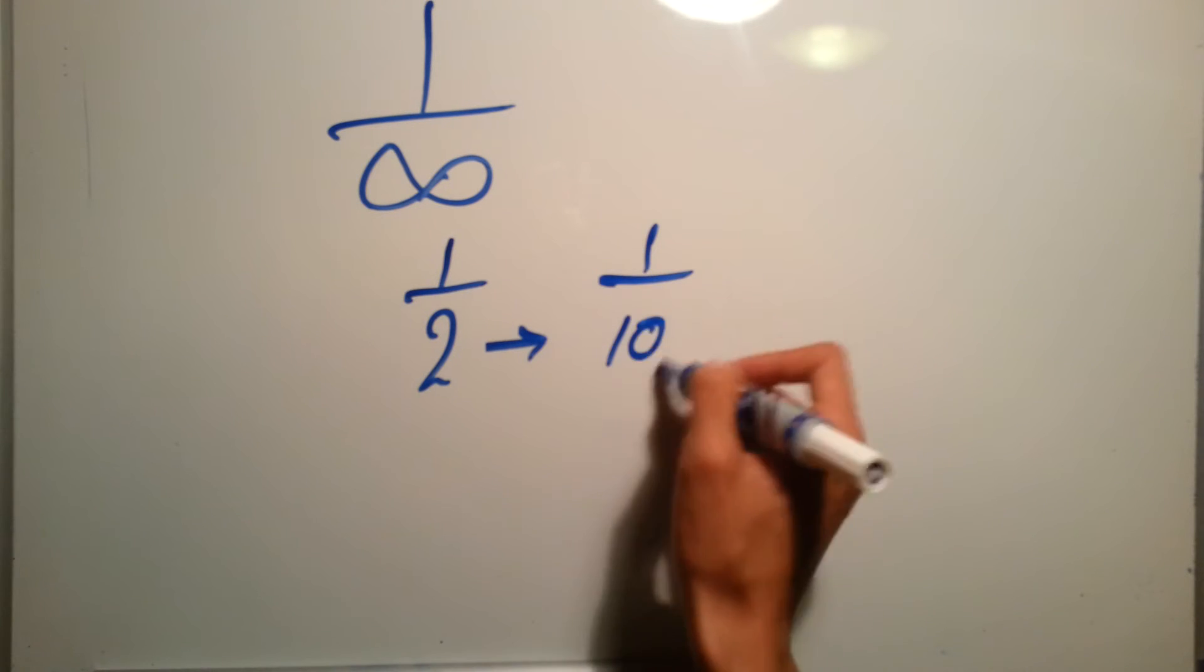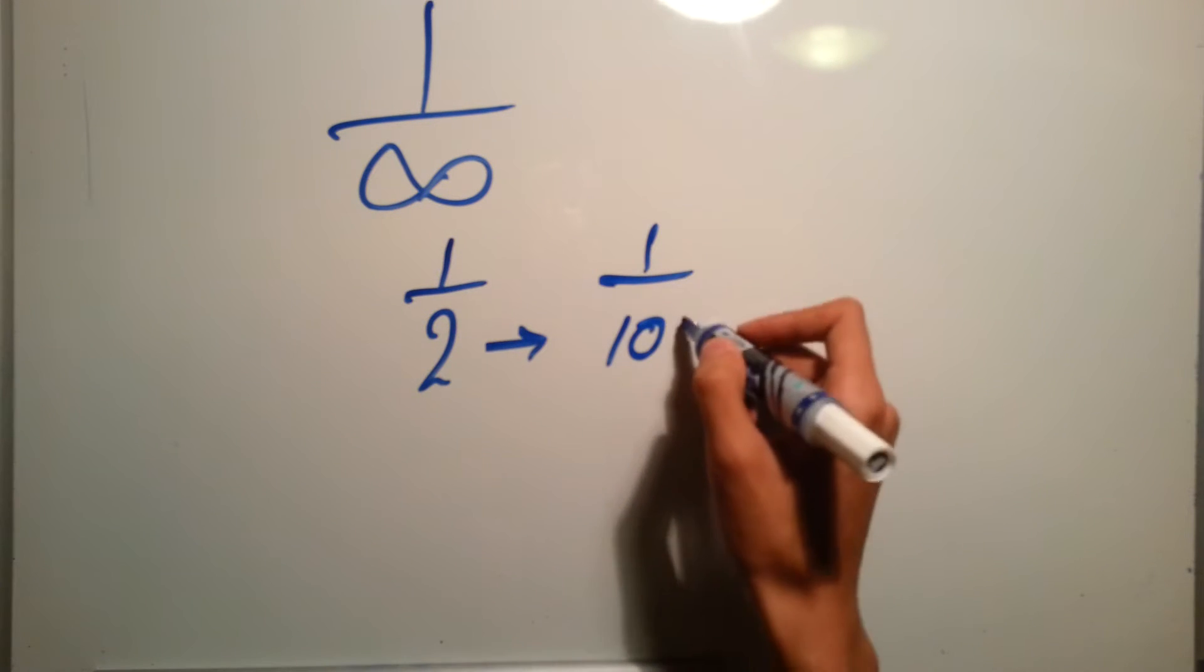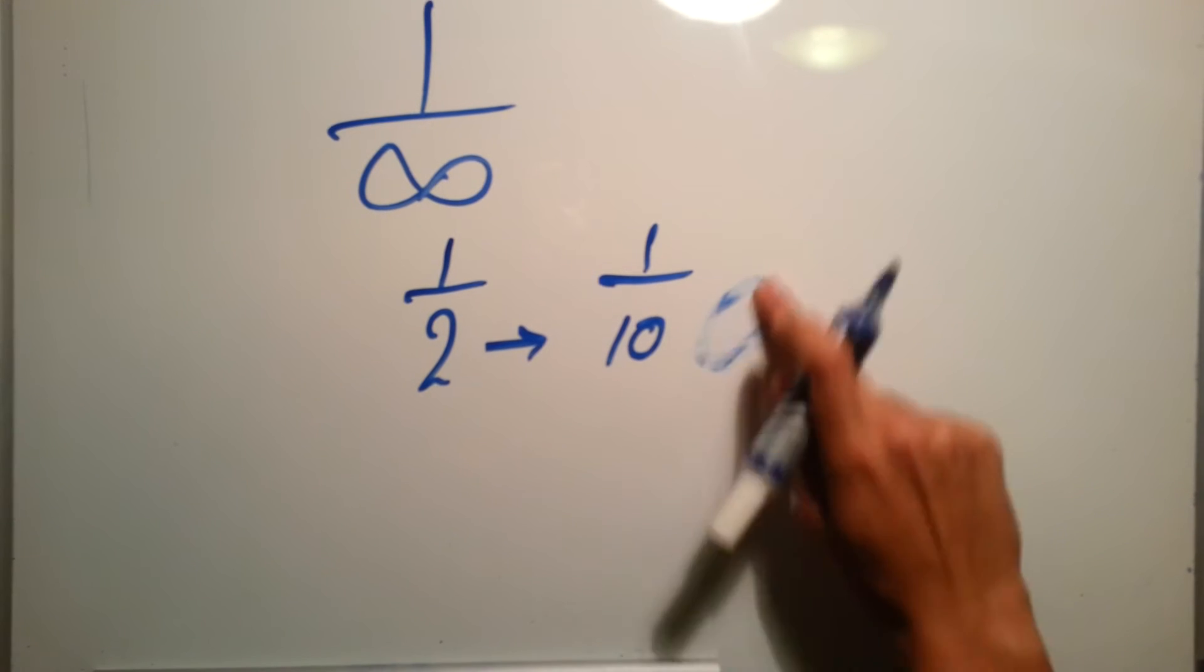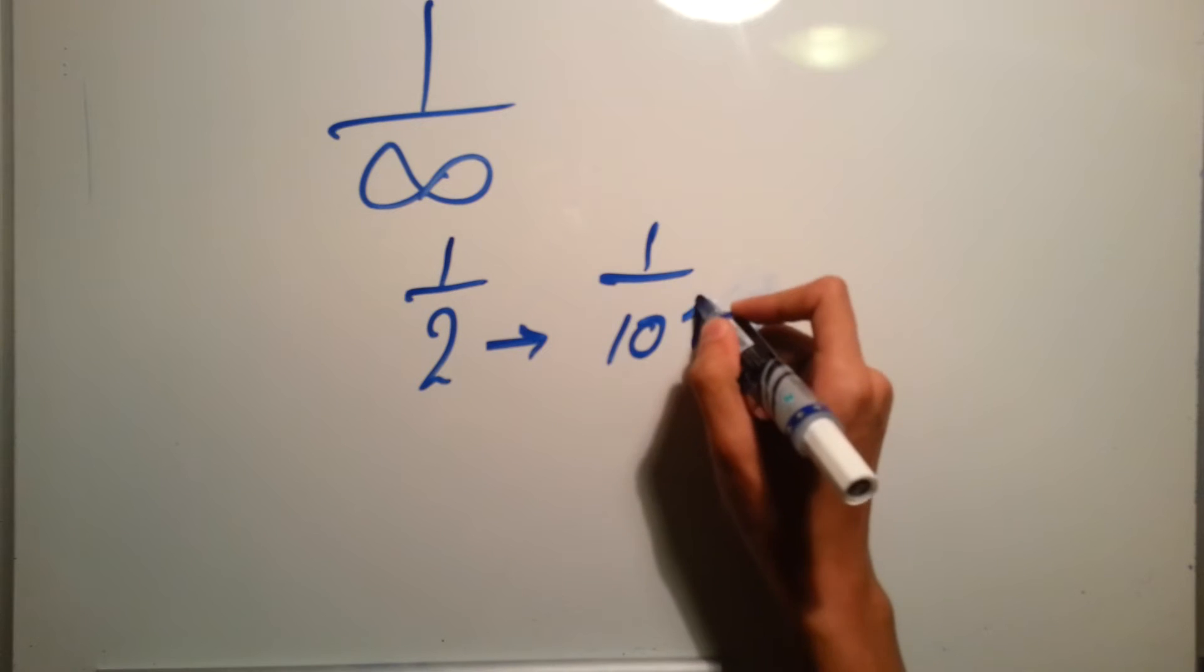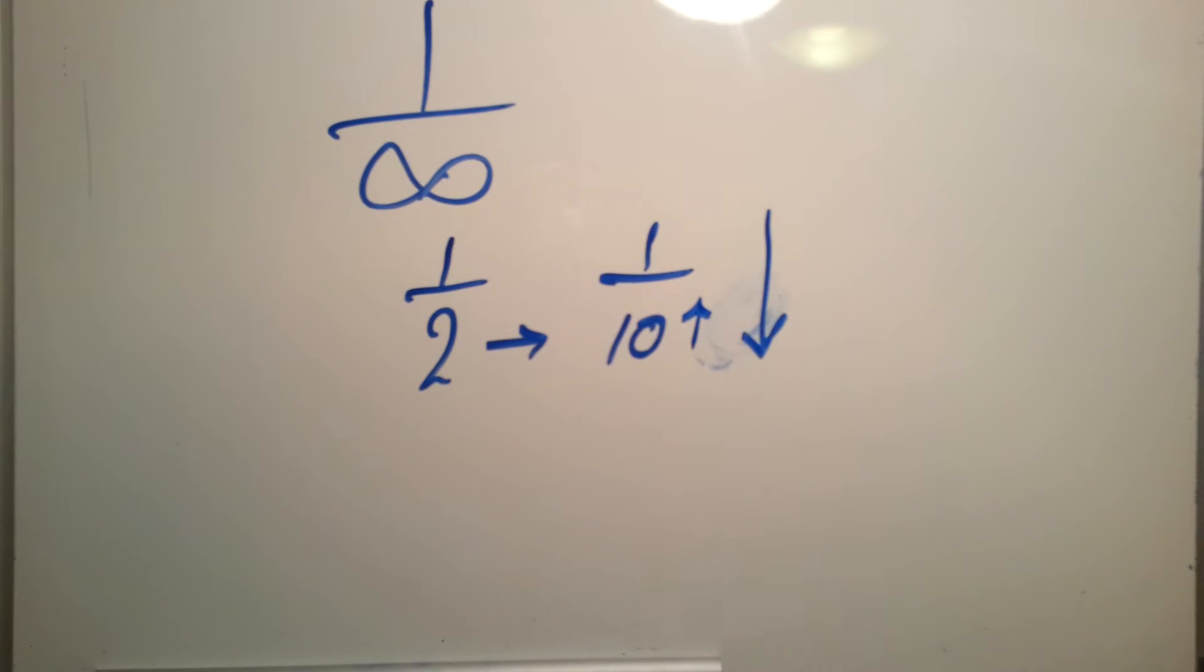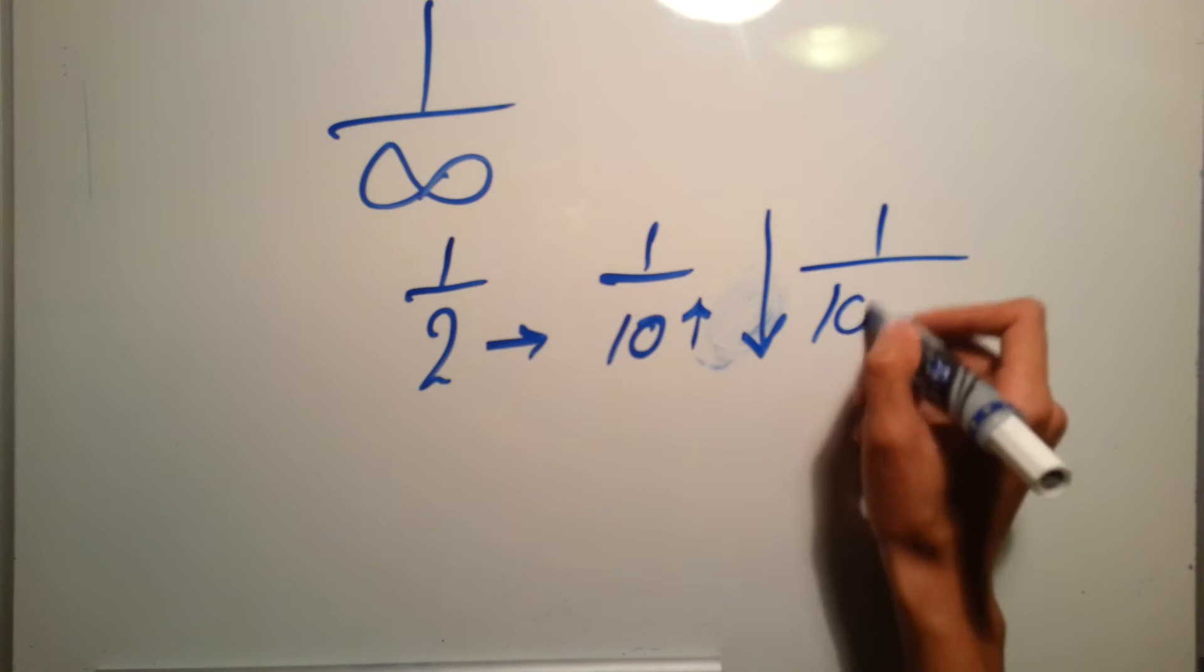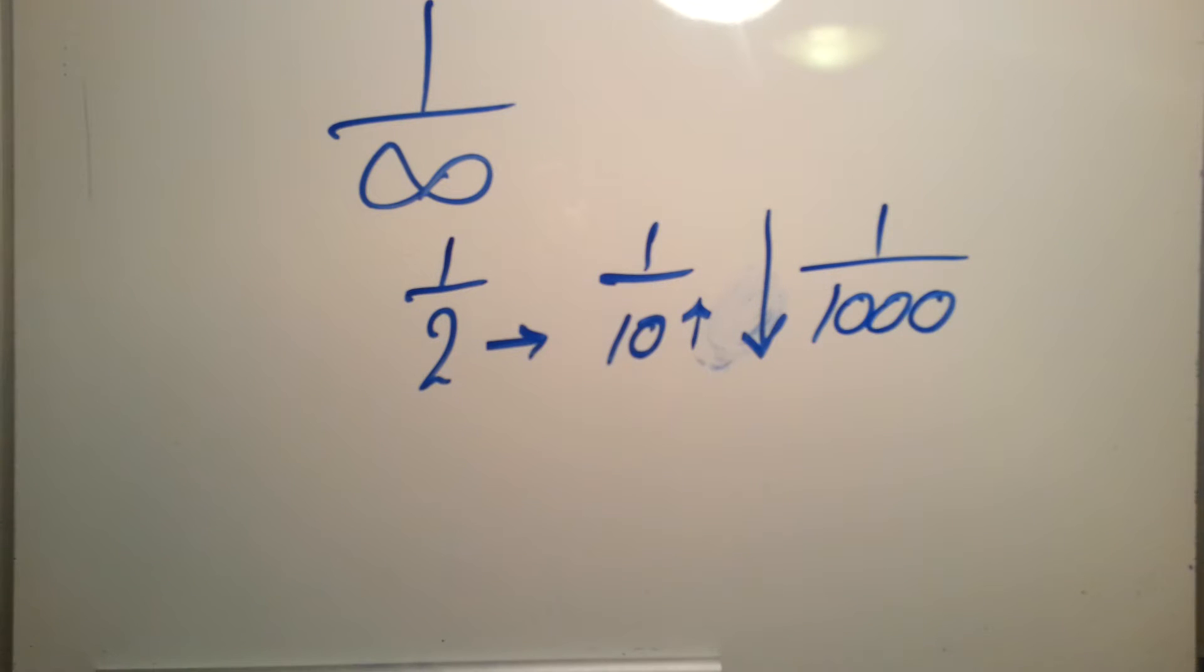Increasing this number will decrease the value. If we increase this number in the denominator, the whole value decreases. So imagine instead of one over ten, you have one over a hundred or a thousand.